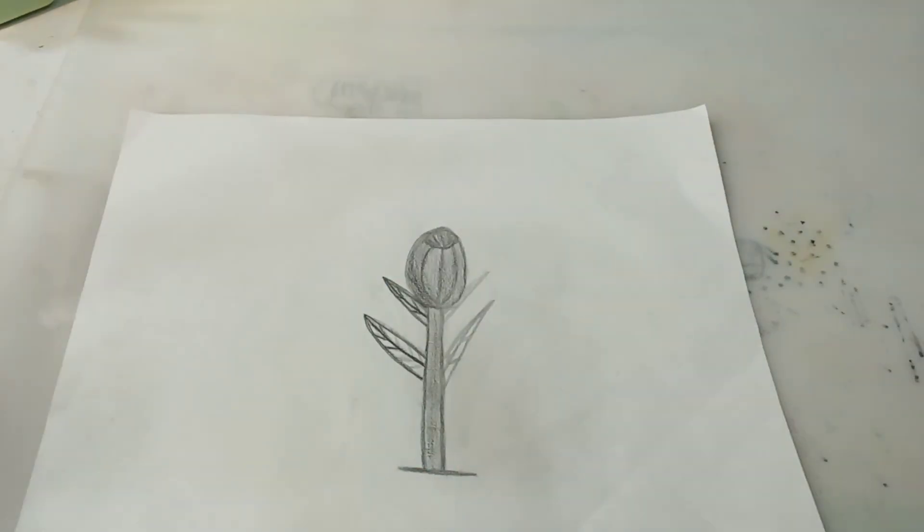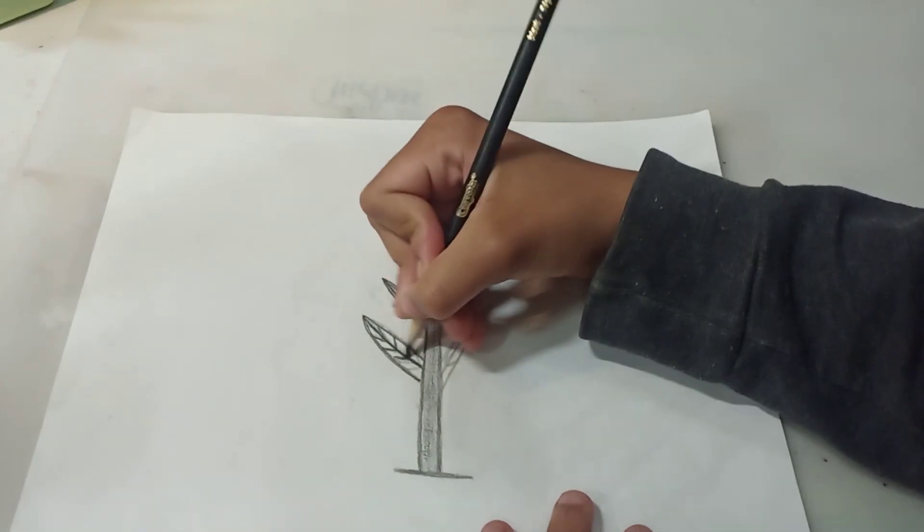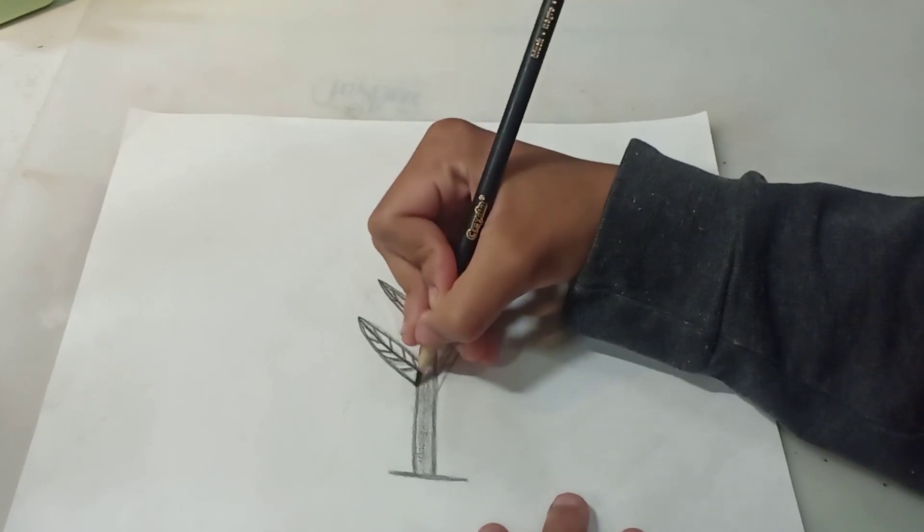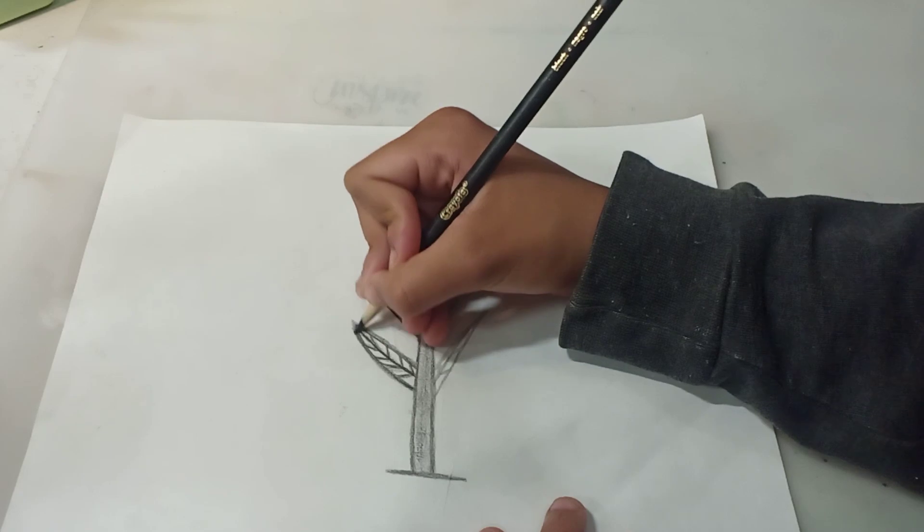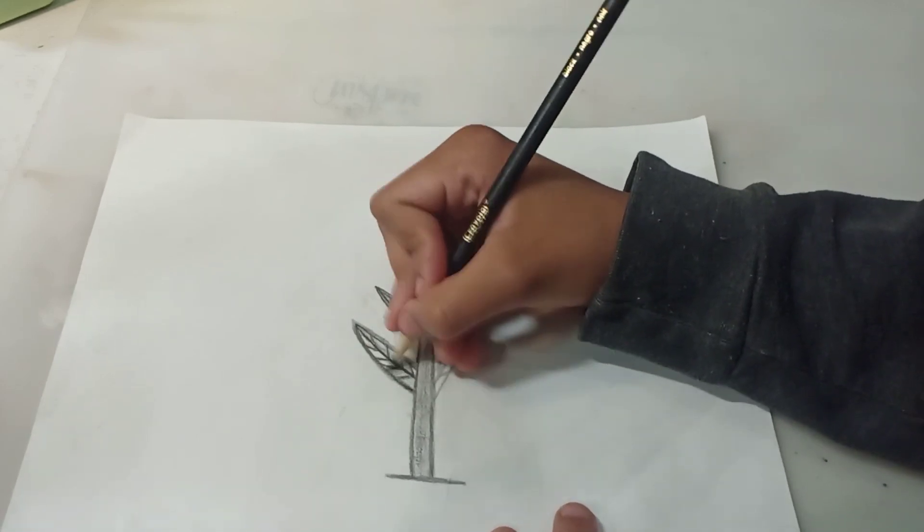So you use a true pencil with eraser and the typical number two pencil. Well, not typical, but that type of pencil. And you just use it so you can erase it and you're not doing so heavy lines.